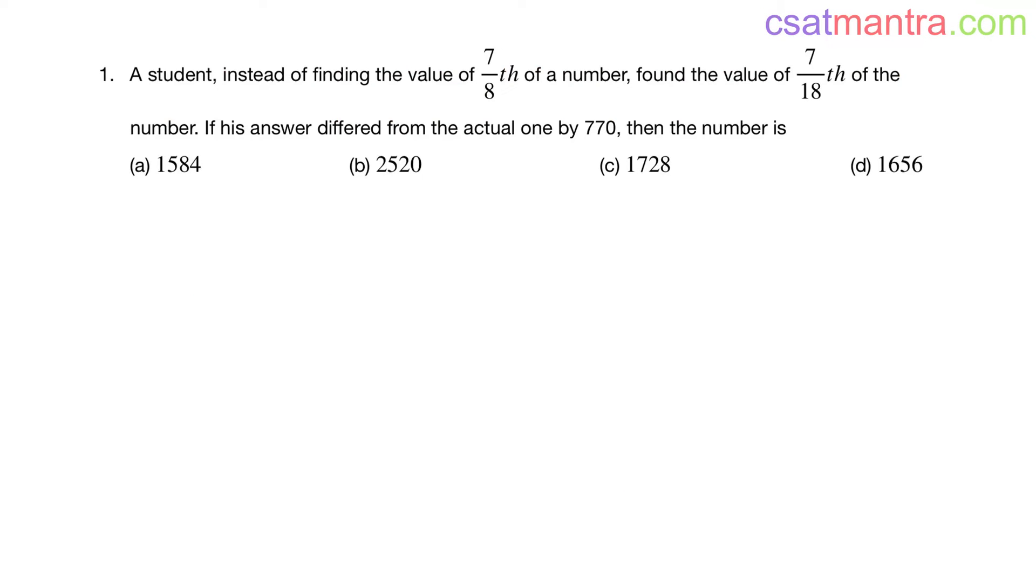A student, instead of finding the value of seven by eight of a number, found the value of seven by eighteenth of the number. If his answer differed from the actual one by 770, then the number is: